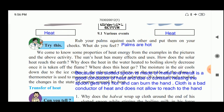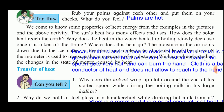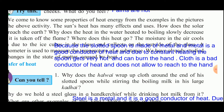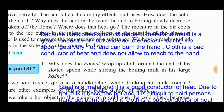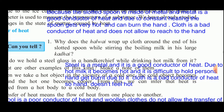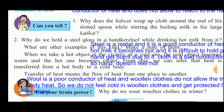Why does the halwa vendor wrap cloth around the end of his slotted spoon while stirring boiling milk in a large kadai? The slotted spoon is made of metal, which is a good conductor of heat. Due to constant heating the spoon gets hot and can burn the hand. Cloth is a bad conductor of heat and does not allow the heat to reach the hand, so he wraps cloth around the spoon end.